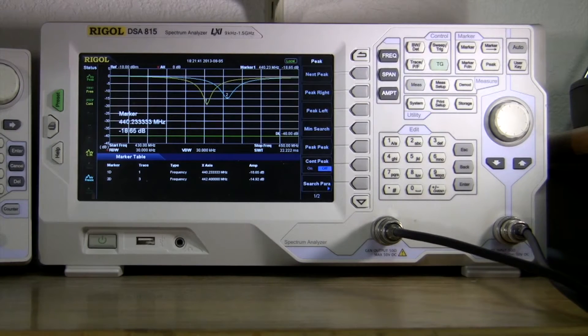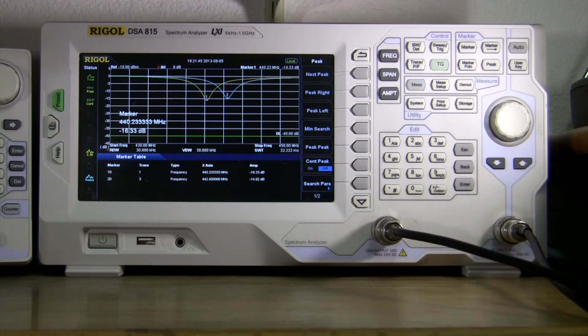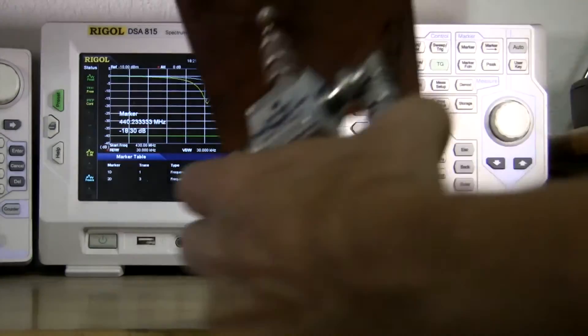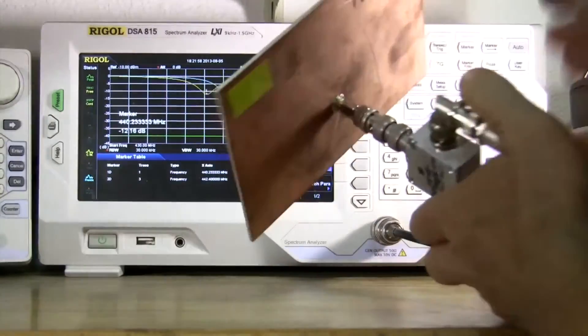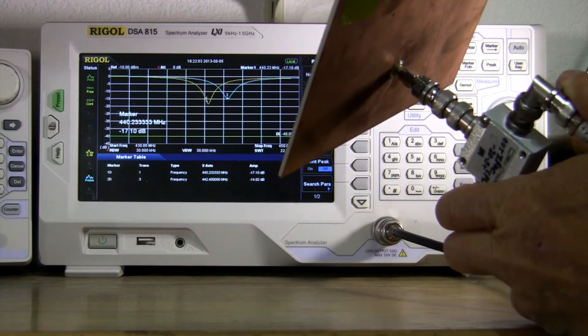I'll get that out of the way so you can see what it's doing there. And if I wave my hand near the antenna, you can see that it changes. So that indicates that it's radiating because my hand is reflecting the signal back and changing the return loss.